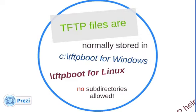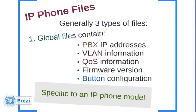Something interesting is that no subdirectories are allowed — though something will probably break that rule. Now in our case we're interested in IP phone files, and generally there are three types. First is a global file, which contains things like the PBX's IP addresses, VLAN information, quality of service information, firmware version, button configuration, and it's specific to an IP phone model or manufacturer.